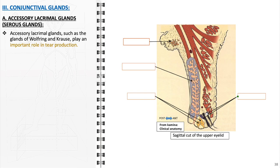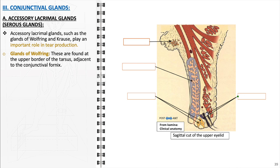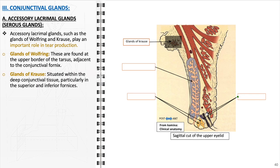The conjunctival glands are essential for the health of the ocular surface and comprise the accessory lacrimal glands, which secrete the watery component of the tear film. These glands are categorized into two main types. The glands of Wolfring, located at the upper border of the tarsus near the conjunctival fornix, are less numerous than the glands of Krause but perform a similar function in contributing to the aqueous layer of the tear film. The glands of Krause are found primarily in the conjunctival fornices, with a greater number in the superior fornix than in the inferior. These small, branched, acinar structures are abundant in number and significantly contribute to the aqueous layer of the tear film. These represent the serous glands.